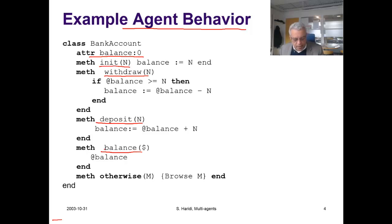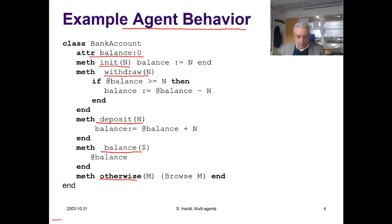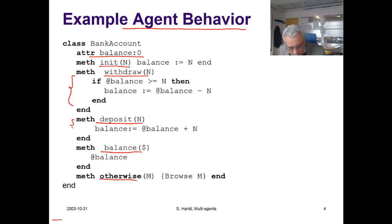It also has a default method. This default in the object system says to ignore other messages. If an agent receives a message it has a behavior, so the method defined here will define the behavior of the agent if it receives a message — for example, if it receives a `withdraw` message.